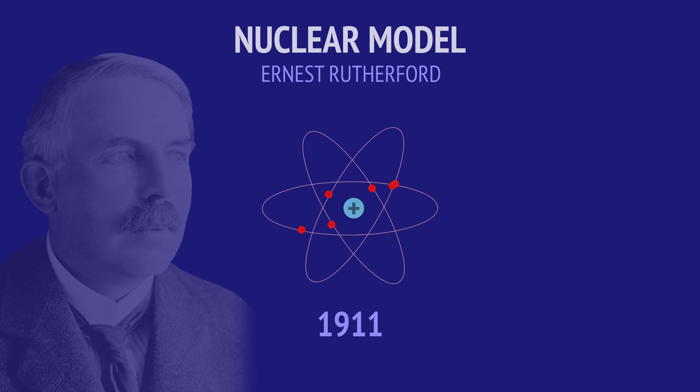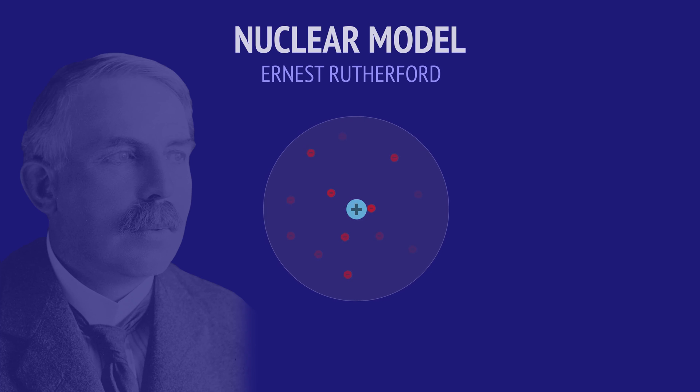The discovery of the nucleus gave rise to Rutherford's nuclear model. With all the mass and positive charge concentrated in the nucleus, Rutherford theorised that the rest of the atom's volume was largely composed of empty space, where electrons freely orbited around the nucleus.